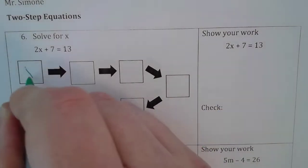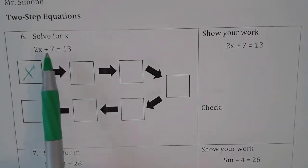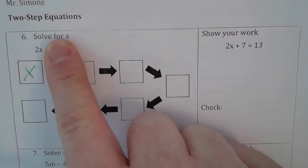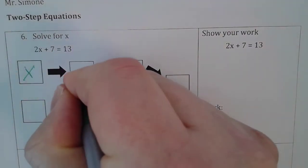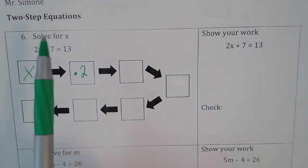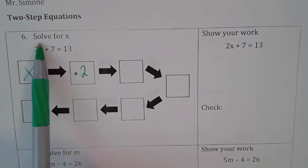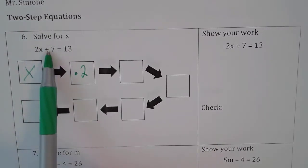I'm going to use both of these to help us through the process. First step is always to identify the variable. Our variable is x. Second thing we want to do is find out what is the first thing that's happening to x. You'll notice that there's a 2 in front. That means x is being multiplied by 2. The second thing that's happening to the x value is that this whole quantity is being added by 7.